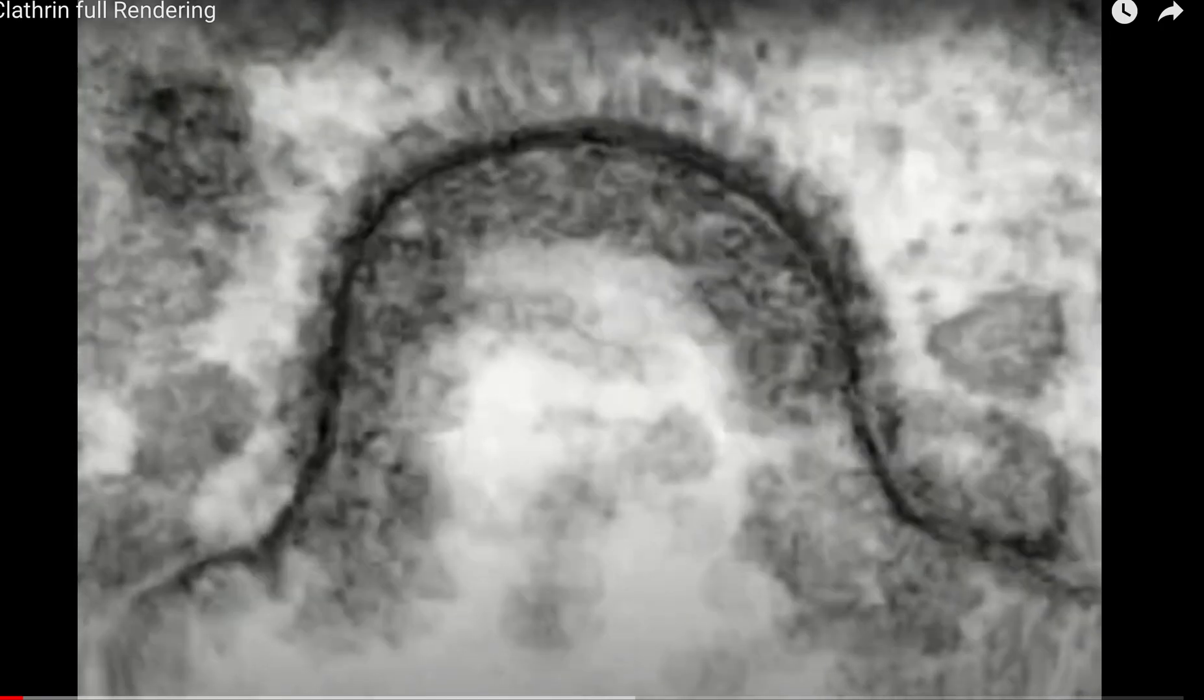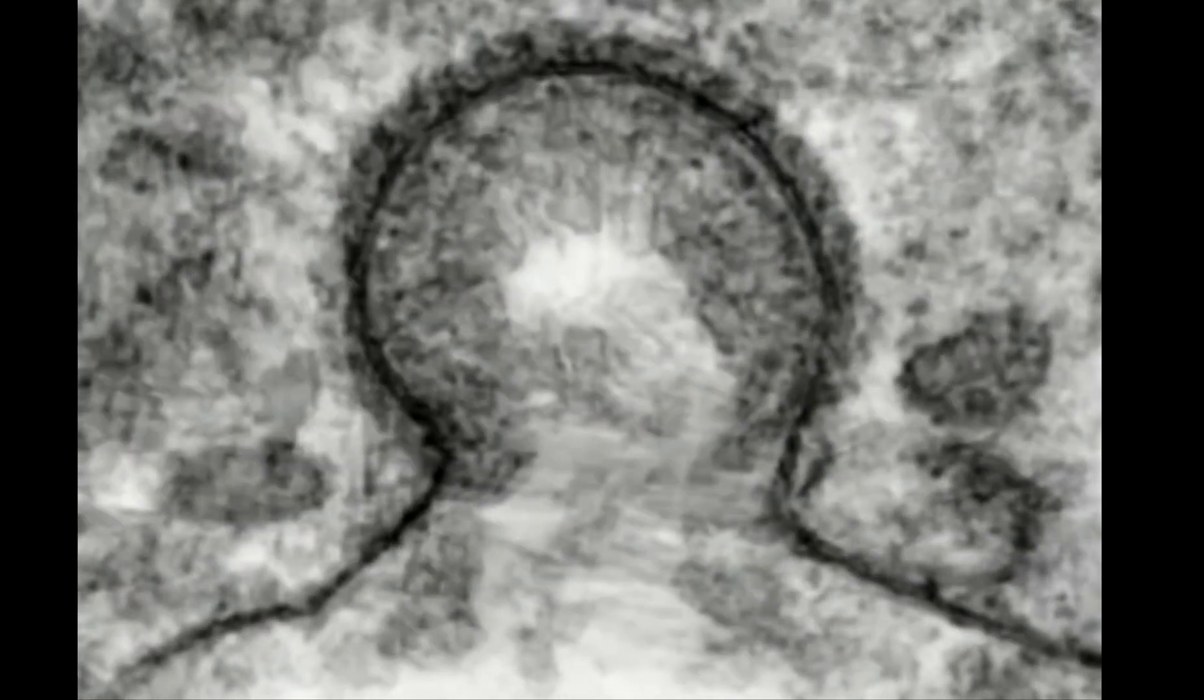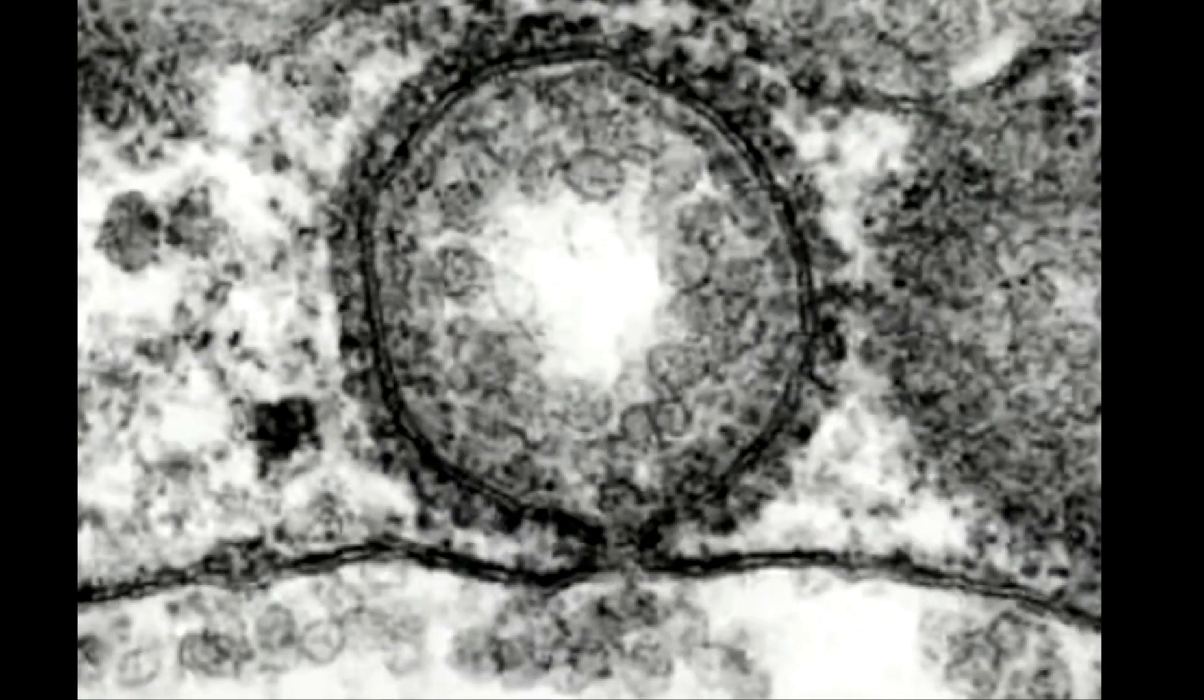Eukaryotic cells take in extracellular molecules through a process called endocytosis, in which the plasma membrane invaginates and pinches off cargo-filled vesicles.